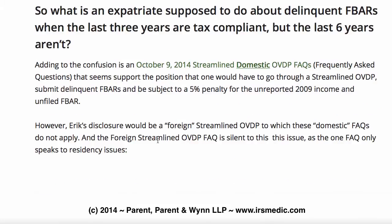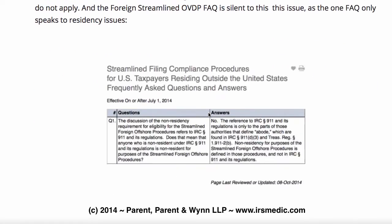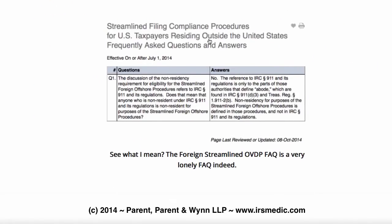So what's an expatriate supposed to do? Adding to the confusion is that on October 9th, the IRS issued streamlined domestic OVDP FAQs, and that seems to support the position that one would have to go through a streamlined OVDP if they have unreported income in the three years prior to the immediate three years — and have that subjected to a 5% penalty. However, in this case, Eric is subject to the foreign streamlined OVDP, to which these domestic FAQs do not apply. The foreign streamlined OVDP FAQ discusses only the residency requirements, so there's nothing really conclusive about it.